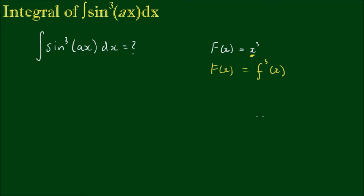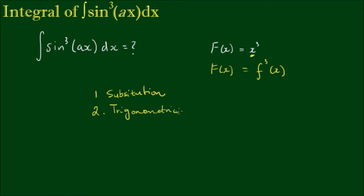We can do that one of two ways: we can use a substitution, or we can use a trigonometric identity. The two solutions are fundamentally different but they should produce the same result at the end. So let's have a go at substitution.